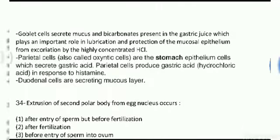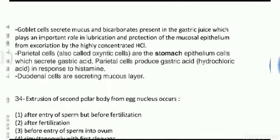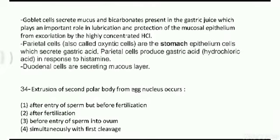Goblet cells secrete mucus and bicarbonates present in gastric secretions, which play an important role in lubrication and protection of the mucosal epithelium from the highly concentrated hydrochloric acid. Parietal cells, also called oxyntic cells, are present in the stomach lining and secrete gastric acid, which is hydrochloric acid — the main acid of our stomach secreted by parietal cells, also called oxyntic cells.